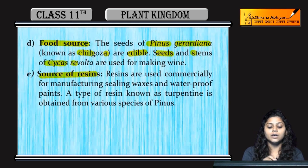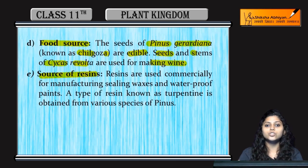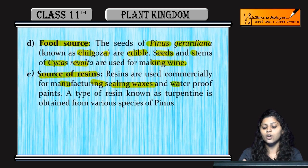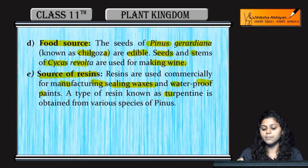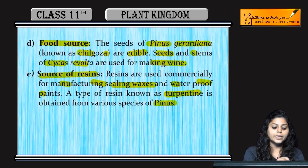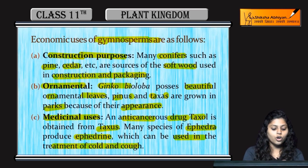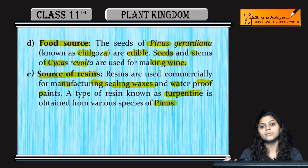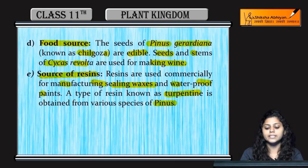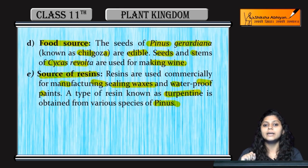Seeds and stems of Cycas revoluta are used for making wine. Some gymnosperms are sources of resins for manufacturing sealing waxes and waterproof paints. Some types of resins such as turpentine are obtained from the species pinus. So gymnosperms are used for construction with softwood, ornamental purposes, medicinal uses, food sources like chilgoza, wine making, and producing sealing wax, waterproof paints, and turpentine from pinus.